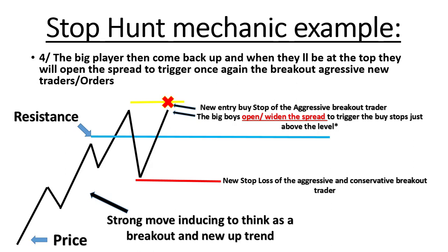They widen the spread to trigger the buy stops just above the level. You can see this directly on your chart — place a spread indicator on your MetaTrader 4 and when the price reaches a level of support and resistance, just watch the spread go from maybe 2 pips to 5 or 6 pips, and sometimes more. There are people really manipulating the market and they have control above your MetaTrader 4 too. I will not get into detail here, but they have this power and they can use it.